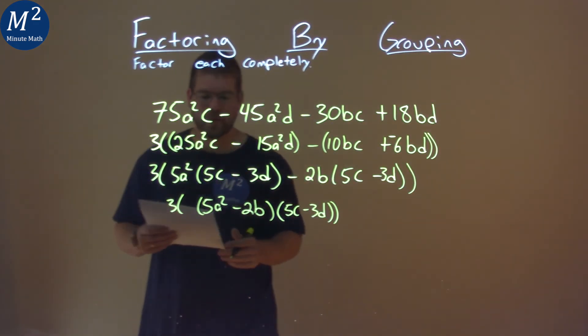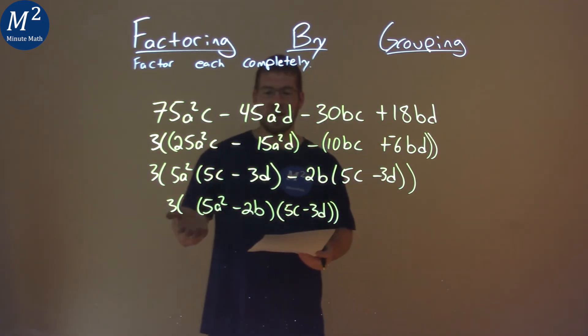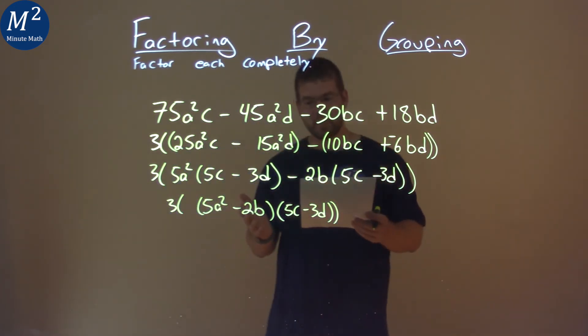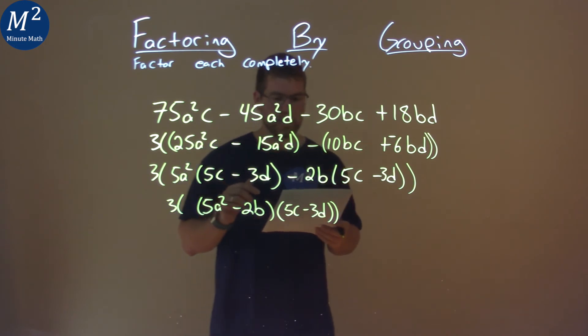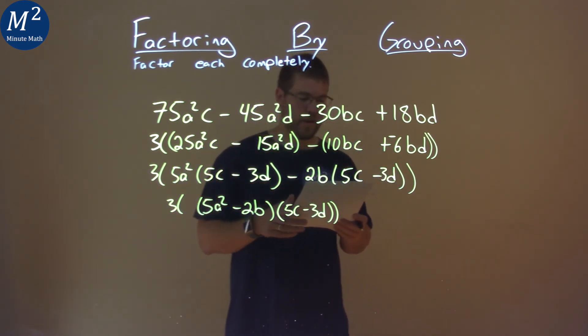I gave myself a lot of room, but it's all right. So our final answer is 3(5a² - 2b)(5c - 3d).